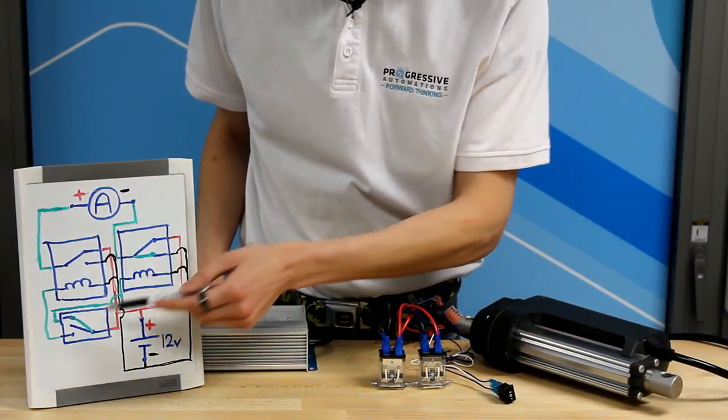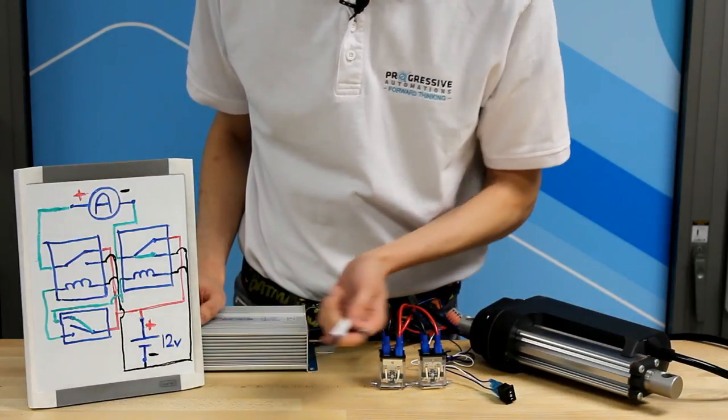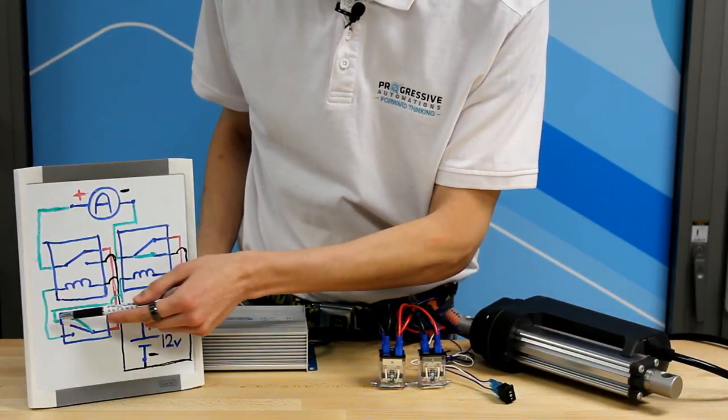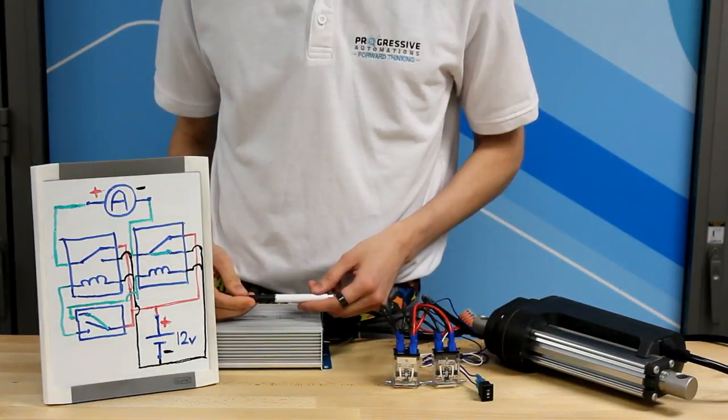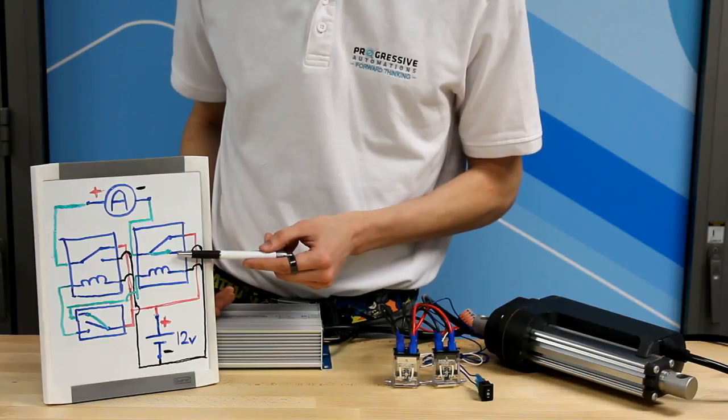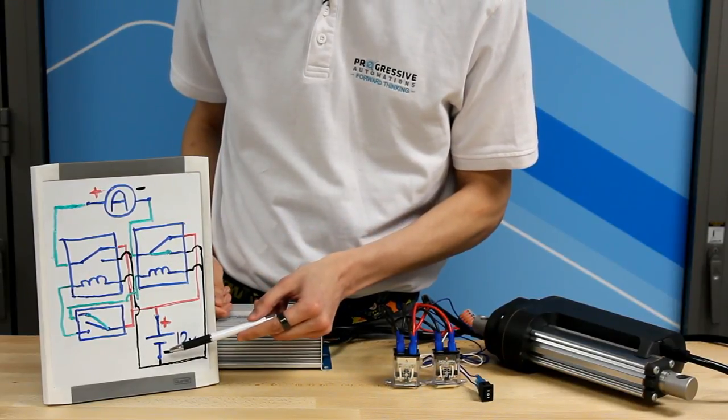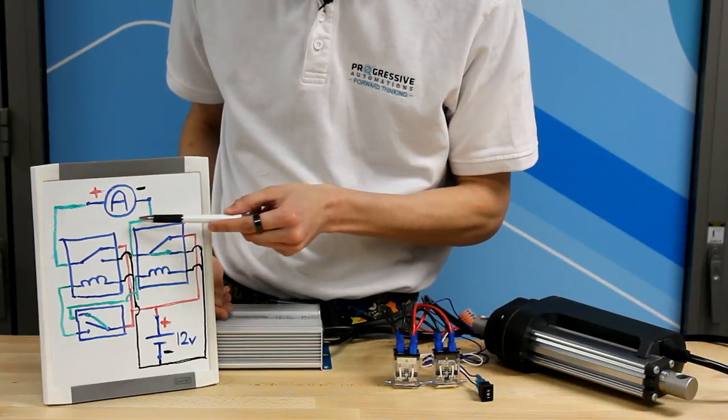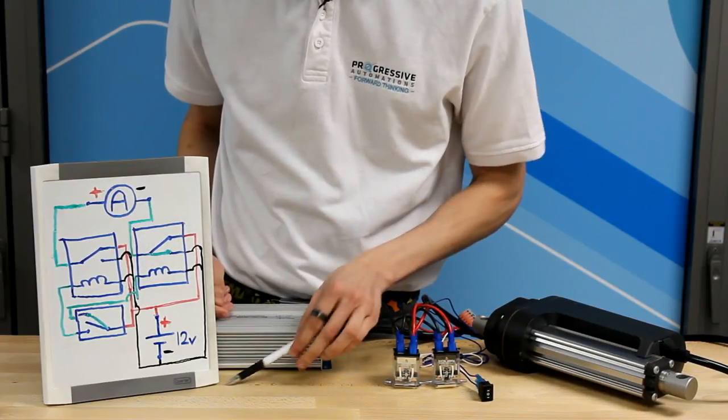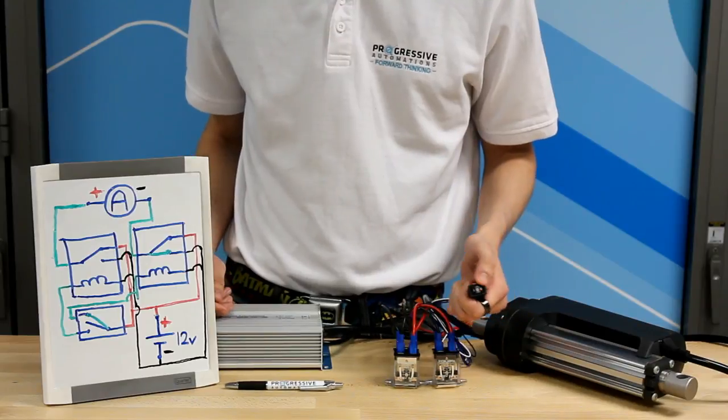I've added these two lines to represent what happens when a rocker switch is pressed. A connection is made here, which allows power to get to the relay through this path. Since this relay has received power, a connection is made from the power supply's negative voltage to the motor's negative terminal through this path. This will cause the linear actuator to extend.